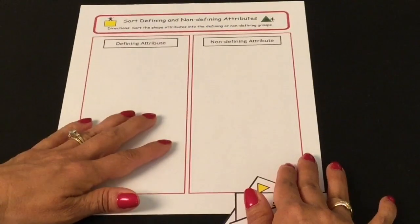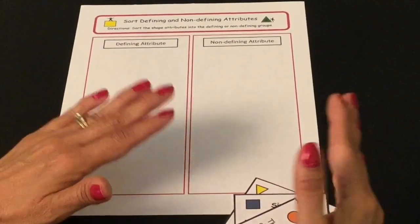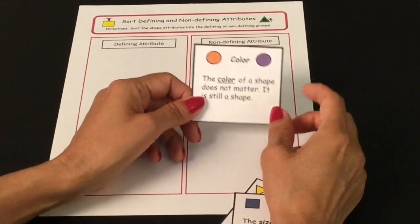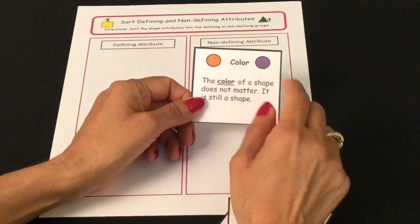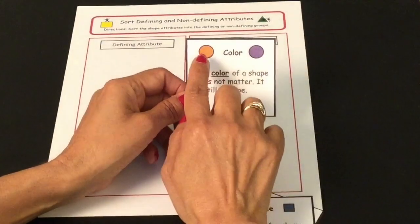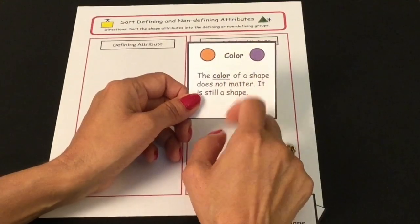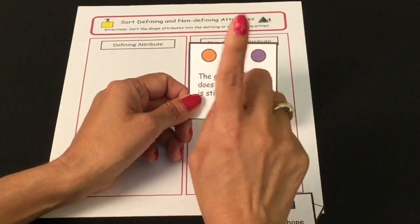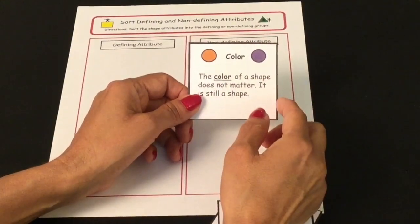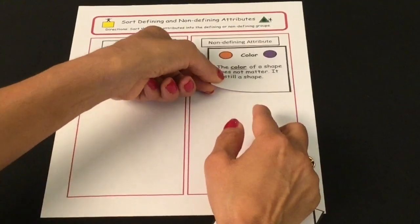Now let's look at non-defining attributes — attributes that don't matter. It doesn't matter if a shape has this attribute or not; it's still considered a shape. The first non-defining attribute is color. You've seen circles that are green, blue, purple, orange — it doesn't matter. They're both still called a circle regardless of their color. Color is an attribute that doesn't matter; it doesn't matter what color the shape is, it is still that shape. So color is a non-defining attribute.